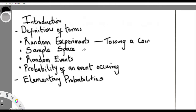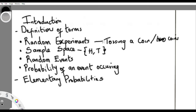Now, what is the sample space? The sample space is all the possible outcomes you can get in an experiment. For example, tossing one coin: the sample space is either head or tail. What if you're tossing two coins? The sample space — all possible outcomes — is: head-head, head-tail, tail-head, and tail-tail.